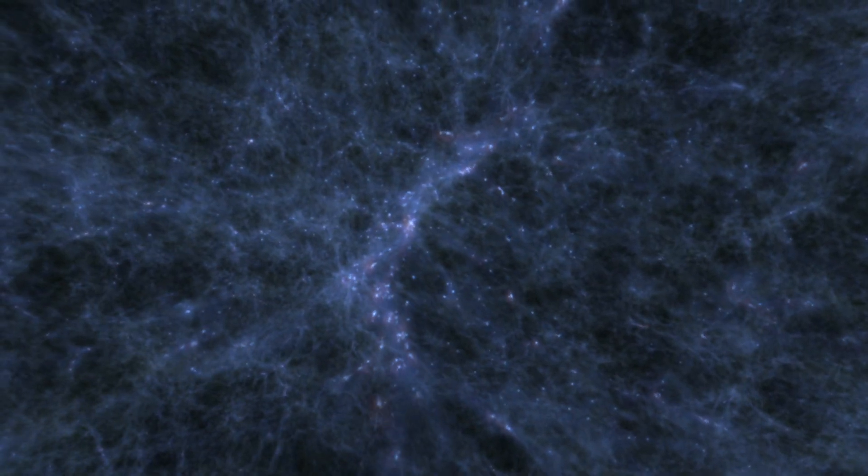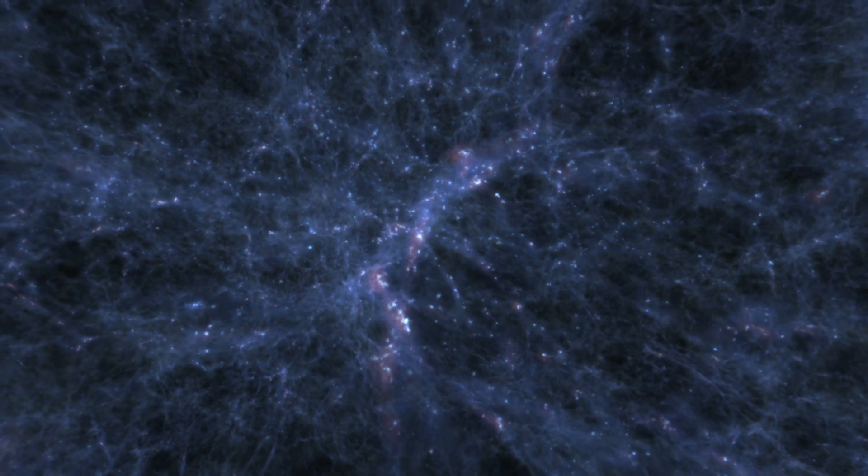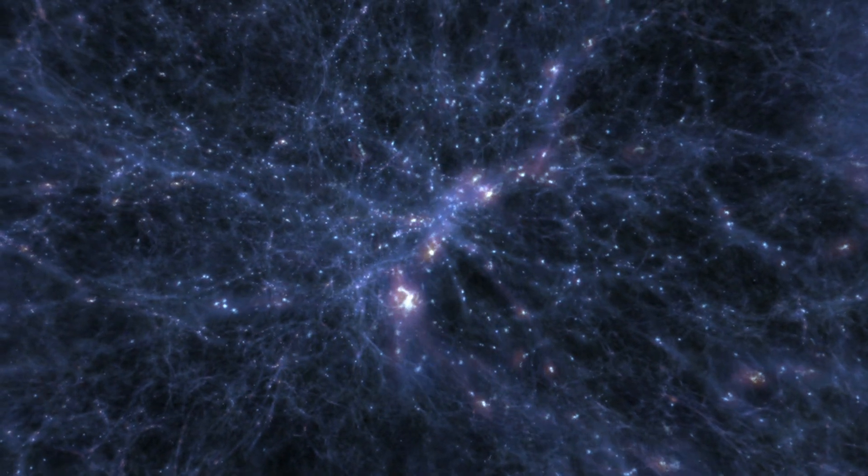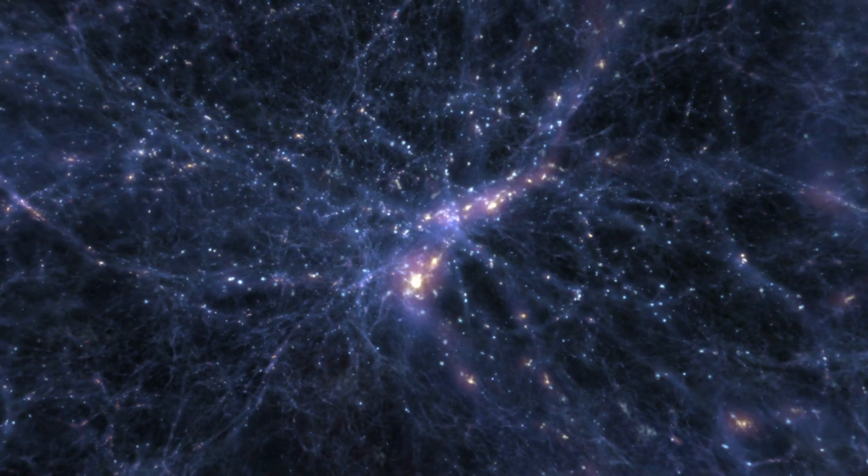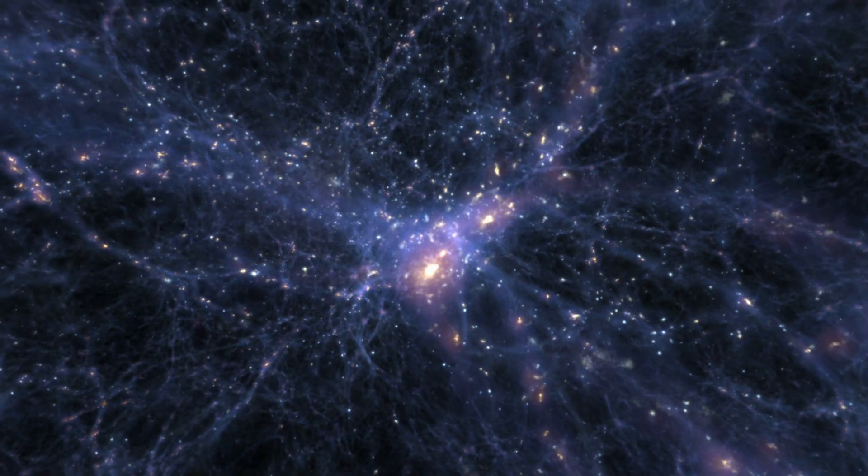When the universe was about half its present age, about seven billion years ago, galaxies crashed together more frequently, and these collisions produced gas-rich galaxies with heavily obscured black holes.